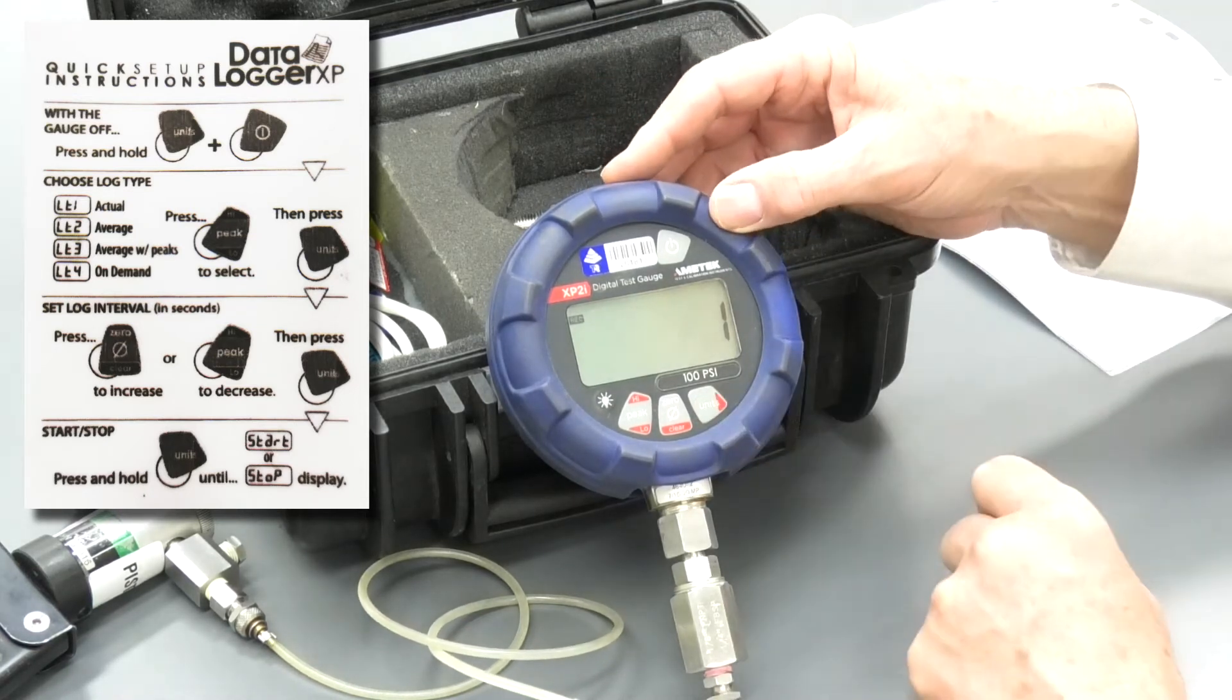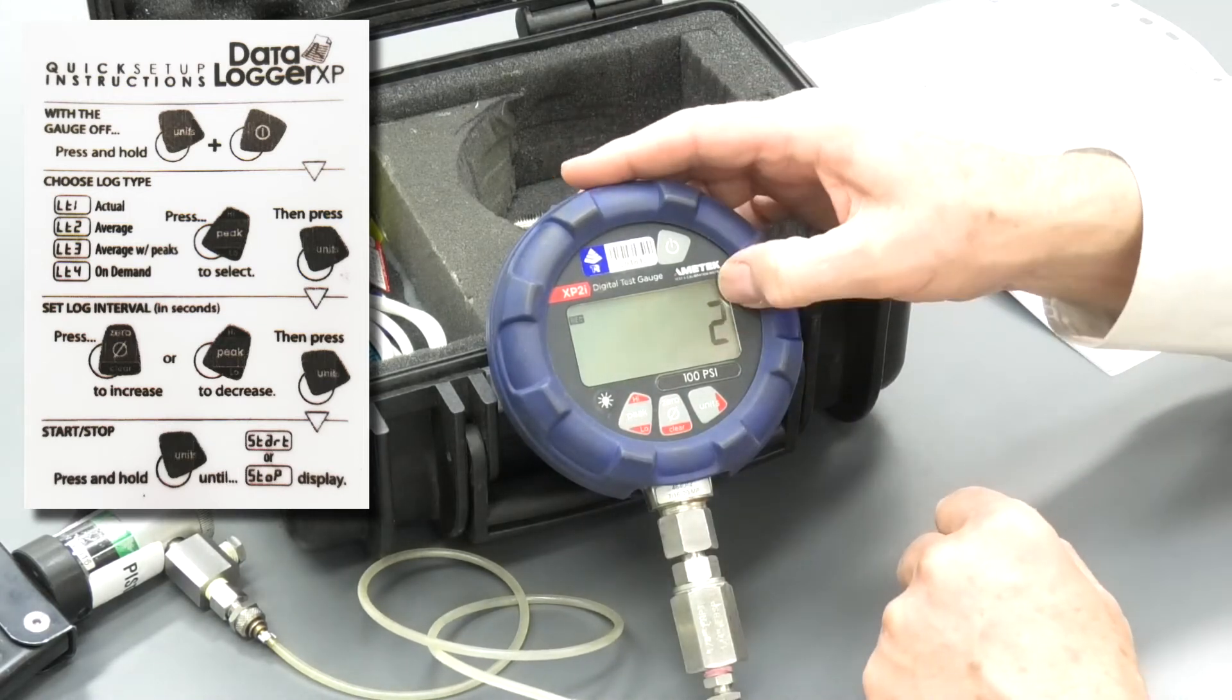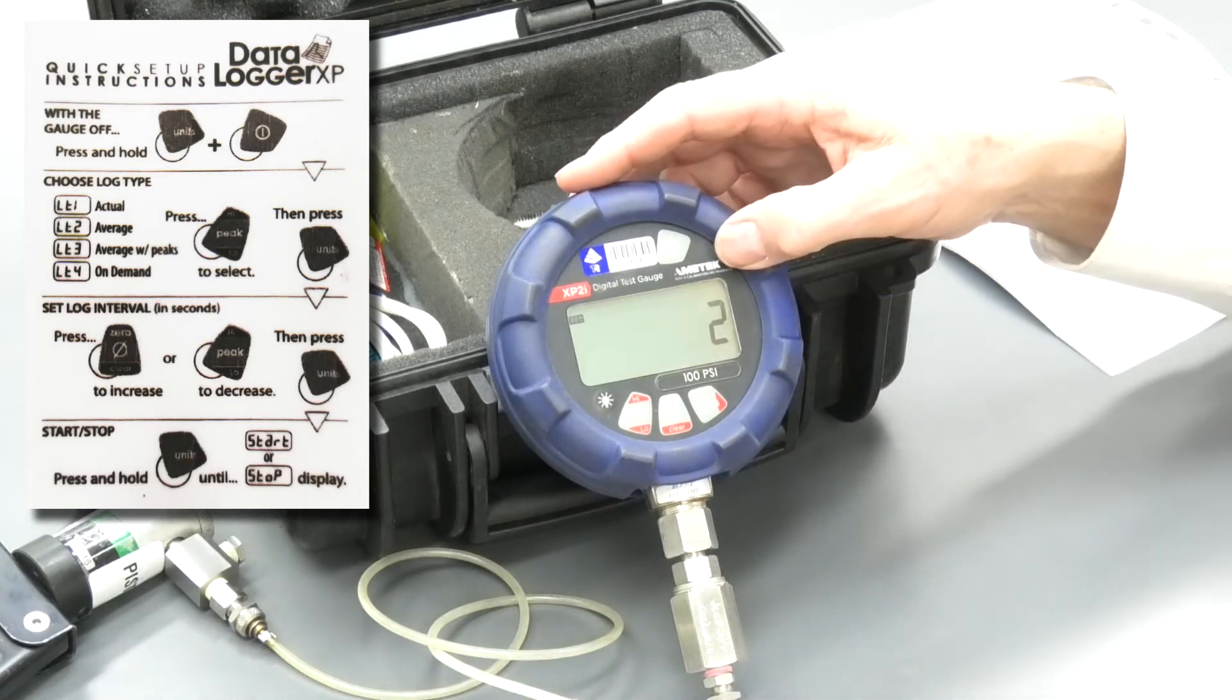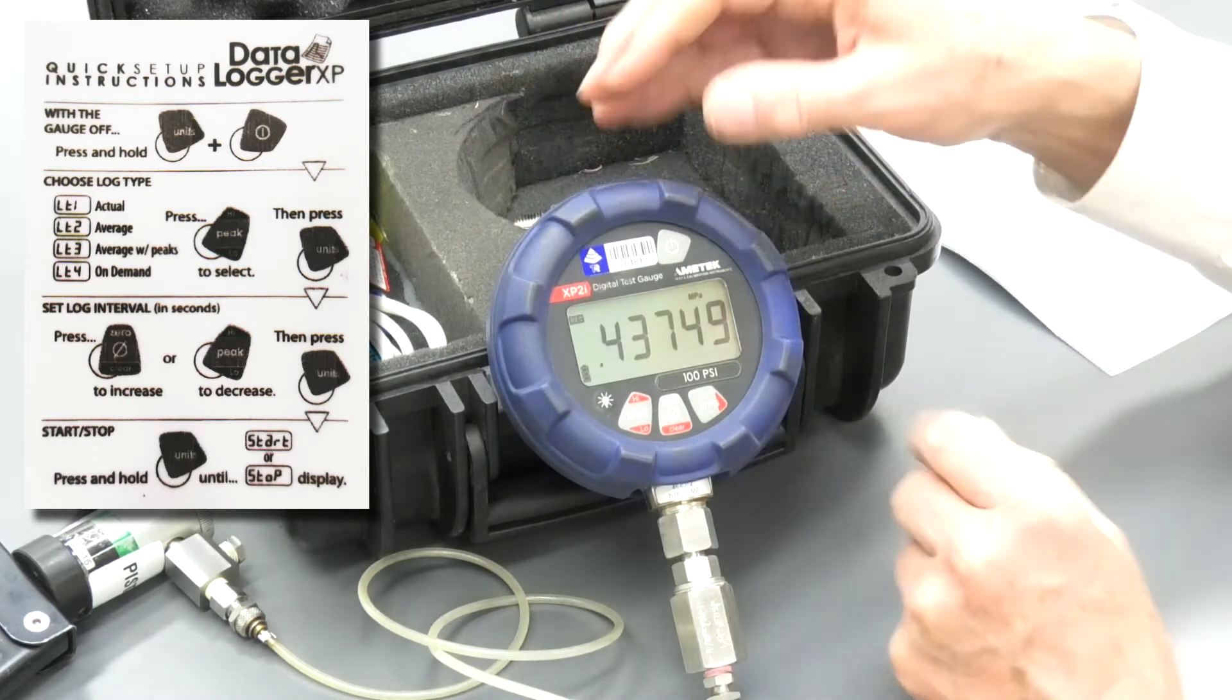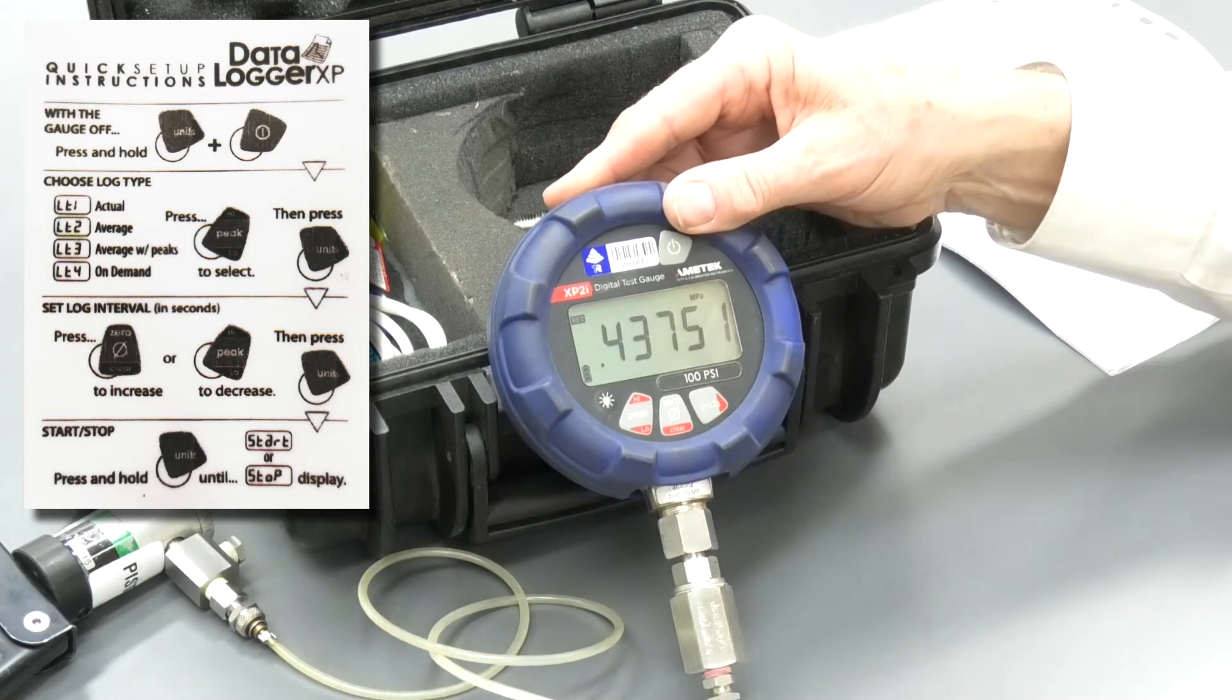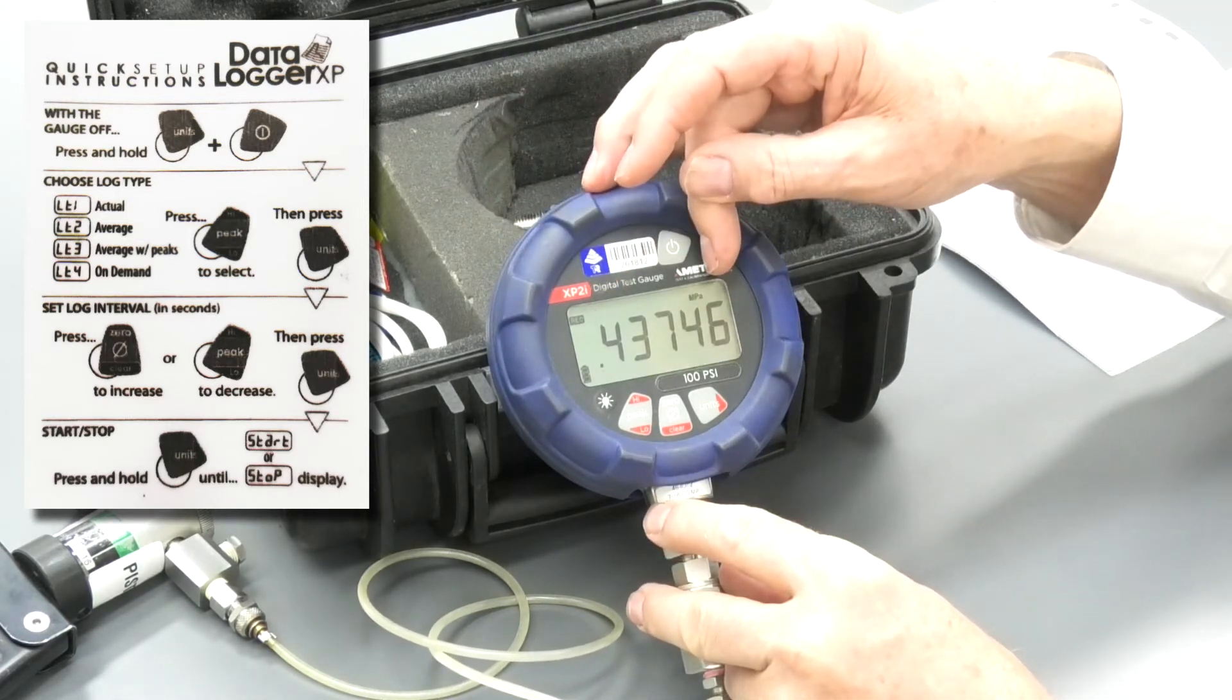Now I hit the units key here. That's how often we're going to record. We can increase or decrease. So if we make it every, that means it's going to take a recording every two seconds. That's pretty quick. And then we can press the units key and it's ready to record. Now in order to start recording, we hold the units key down and we can start. Now we'd lift our finger off and now it's taking a reading every two seconds. And we're doing it in MPA.